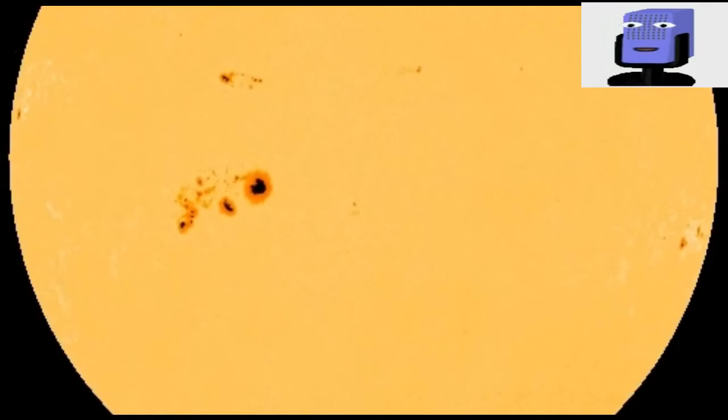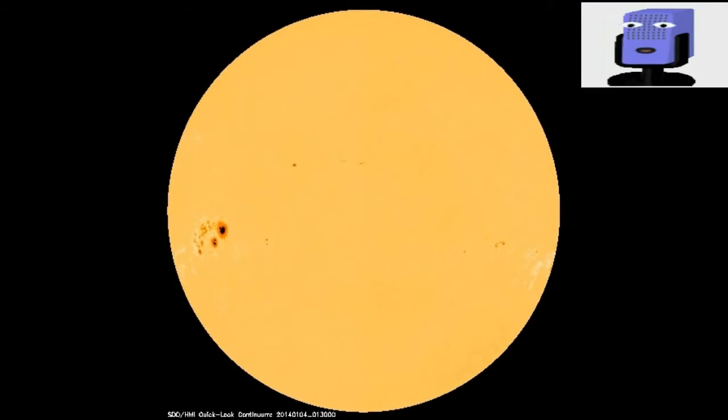One of the biggest sunspots in years is crossing the center of the solar disk, putting Earth in the way of potential eruptions. Rocky Raybell photographed the active region named R-1944 yesterday from his backyard in Keller, Washington.